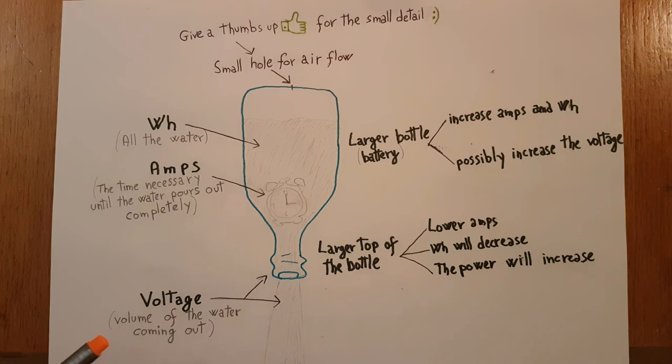The voltage is how much water comes out, or the size of the top of the bottle, and the amperage is the time necessary until the water pours out completely.